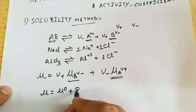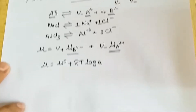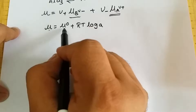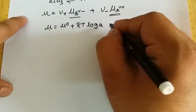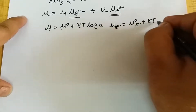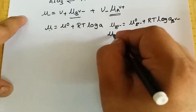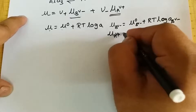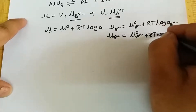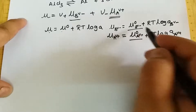We know that chemical potential is related to activity by the relation: μ = μ° + RT ln a. Using this relation, we replace chemical potential terms with activity terms. So μ(B^(ν-)) = μ°(B^(ν-)) + RT ln a(B^(ν-)), and similarly μ(A^(ν+)) = μ°(A^(ν+)) + RT ln a(A^(ν+)).